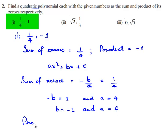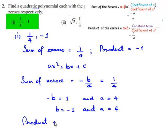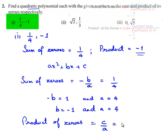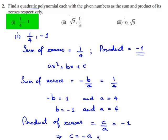Also, the product of zeros is equal to c by a, which is given as minus 1. So we can write c is equal to minus a. We also found the value of a to be 4, therefore c is equal to minus 4. Therefore, we got the values: a = 4, b = minus 1, and c = minus 4.